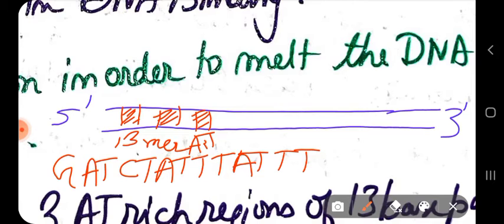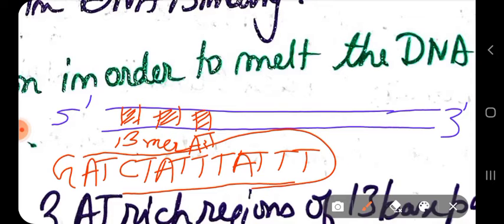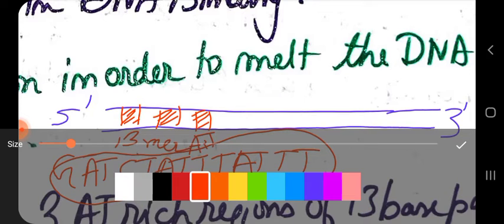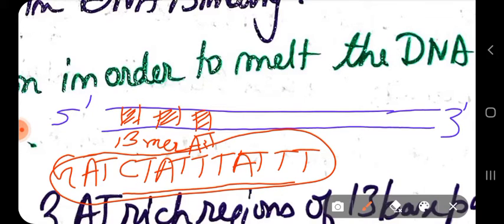DnaA will unwind the DNA at this AT-rich region and allow the other proteins to initiate their functions. It is a 13 base pair rich sequence, that's why it is called the 13-mer. There are also other regions — the 9-mer regions. There are about five 9-mer regions.